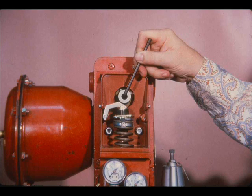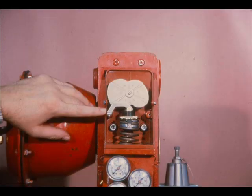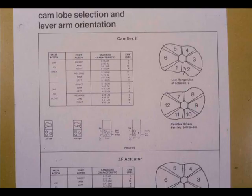The coupling hold-down screw with the lock washer fastens the CAM coupling to the shaft in the valve. The CAM lobe, lever arm orientation, and air supply connection are dependent on the span, valve characteristic, and positioner action. This page from the Mason-Eland instruction manual provides that information.